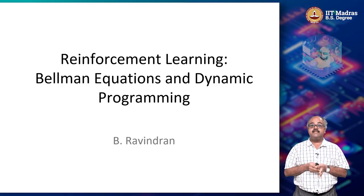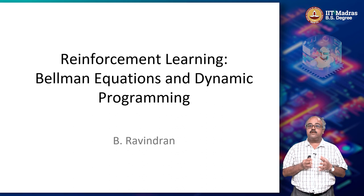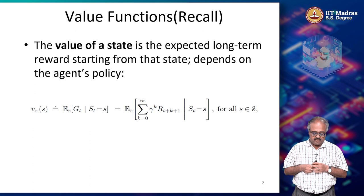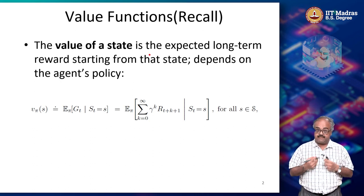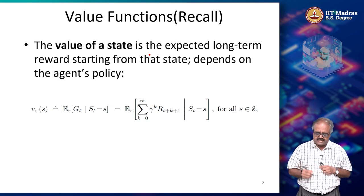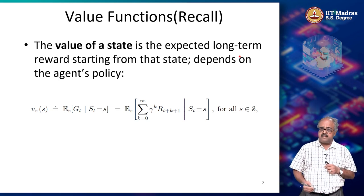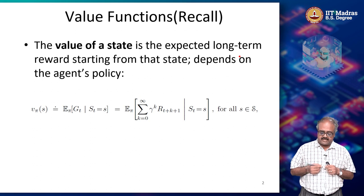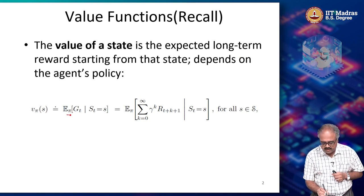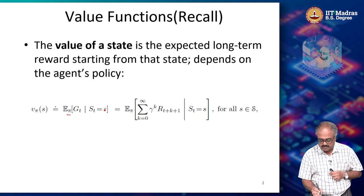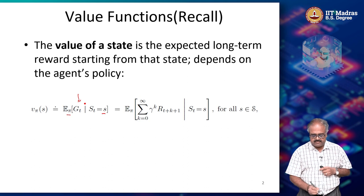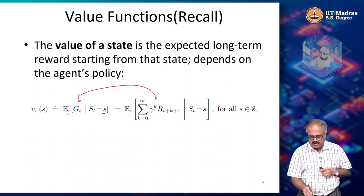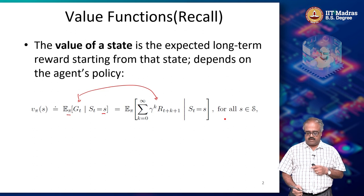Let us look at how we are going to use these value functions in order to solve a Markov decision process. If you recall, a value function or the state value function is the expected long-term return starting from that state, and it depends on the agent's policy. It depends on the policy of the agent and the state from which you start, and the return can be expanded in this form.